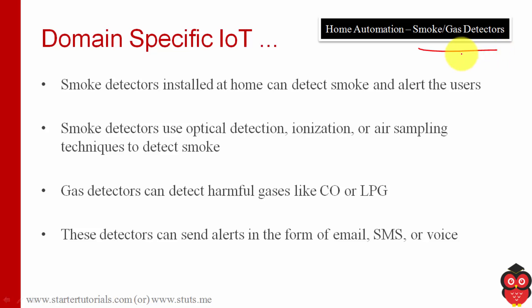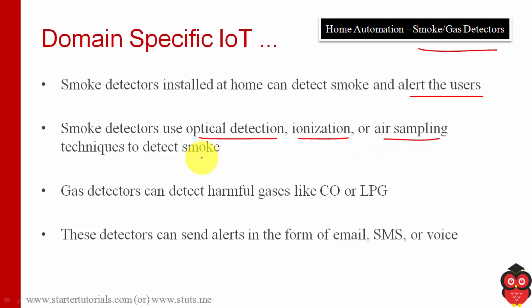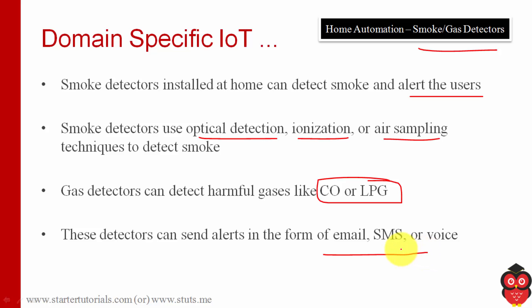The last home automation application is smoke or gas detection. Smoke detectors or gas detectors are installed to alert the occupants about any smoke or harmful gas. These detectors use techniques like optical detection, ionization, or air sampling to detect smoke. Harmful gases like carbon monoxide or LPG can also be detected, and appropriate notifications or alerts can be sent to the user.